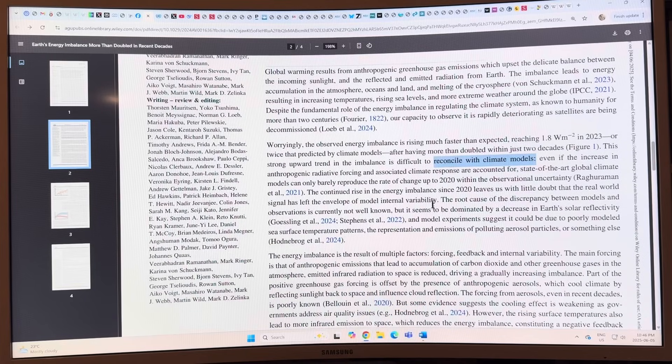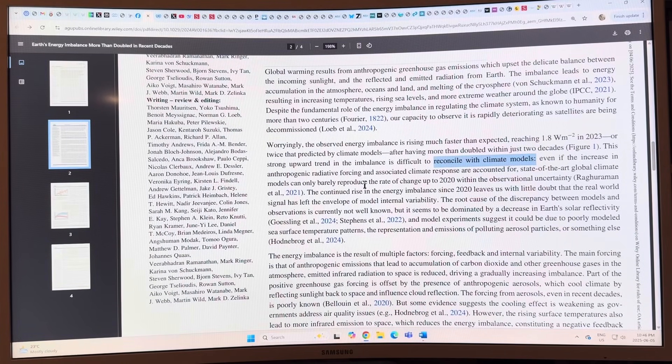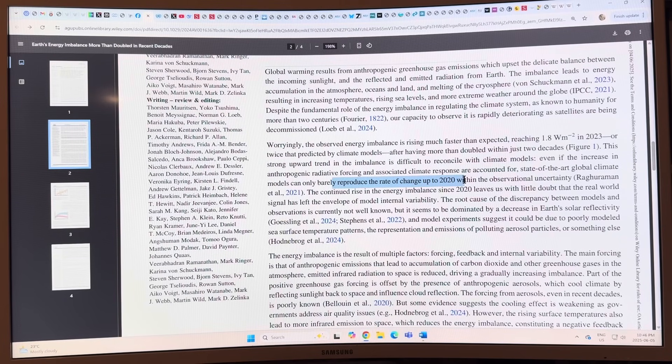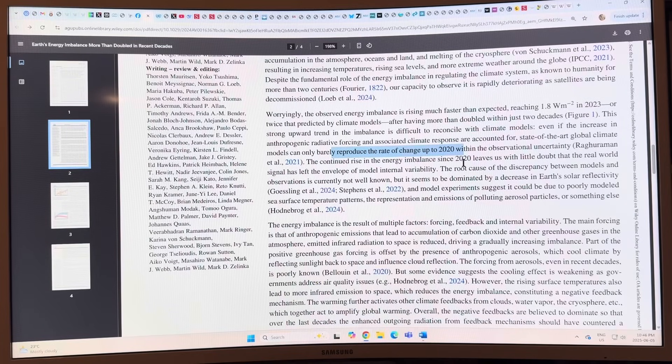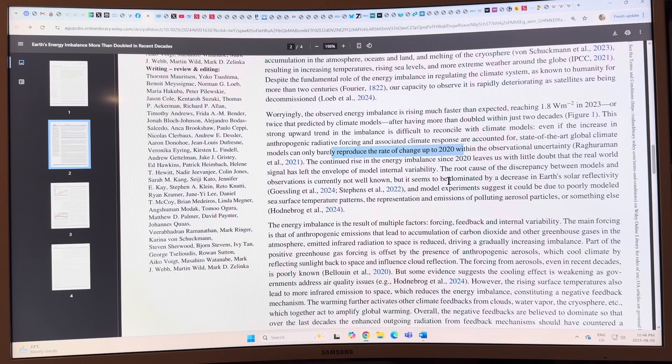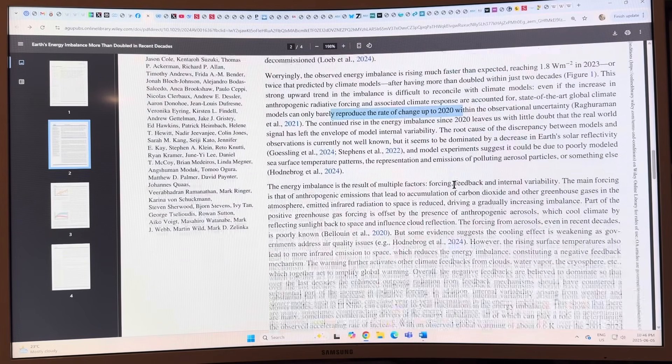The climate models are failing here. They can't reproduce the rate of change. They can barely reproduce it up to 2020, and then it's just taken off since 2020. There's more information on the perplexity.ai site which I showed in the last video. Again, watch the last video, and then when you finish this one, rewatch the last one or watch it if you haven't.